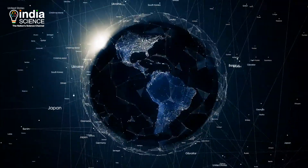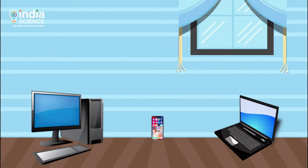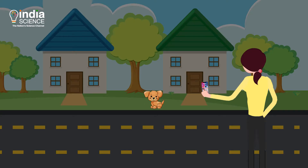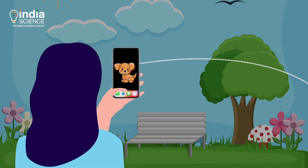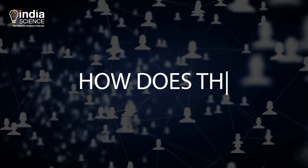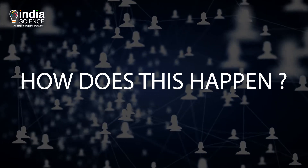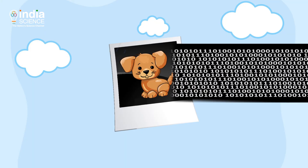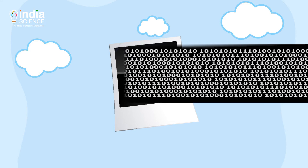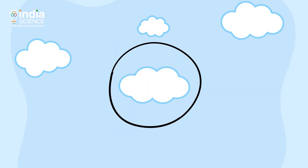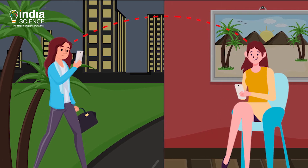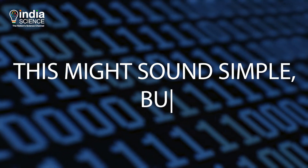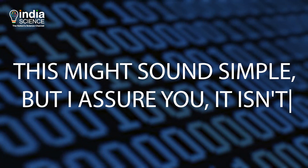The internet connects the world by linking different devices, be it computers, laptops or smartphones. Imagine this: you have clicked a picture of a cute dog. You then share that photo with another canine-loving friend from a different city. She receives the message in an instant. But how does this happen? Once you've hit send, the picture gets converted into a series of zeros and ones, a language that computers understand. Your Wi-Fi or phone broadband will then carry this digital information to its final destination. This might sound simple, but I assure you, it isn't.